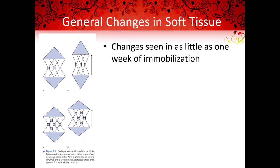Immobilization can have a negative effect on tissues. We can see soft tissue changes in as little as one week of immobilization. These changes include edema, trauma, and impaired circulation. The immobilization causes a loss of the ground substances, which results in less separation between the tissues and more cross-link formation between the collagen fibers. The fiber meshwork contracts and the tissue becomes dense, hard, and less supple, which prevents normal motion.